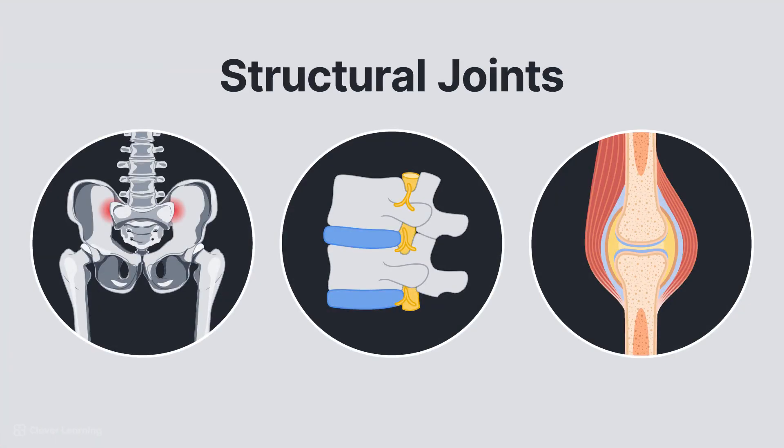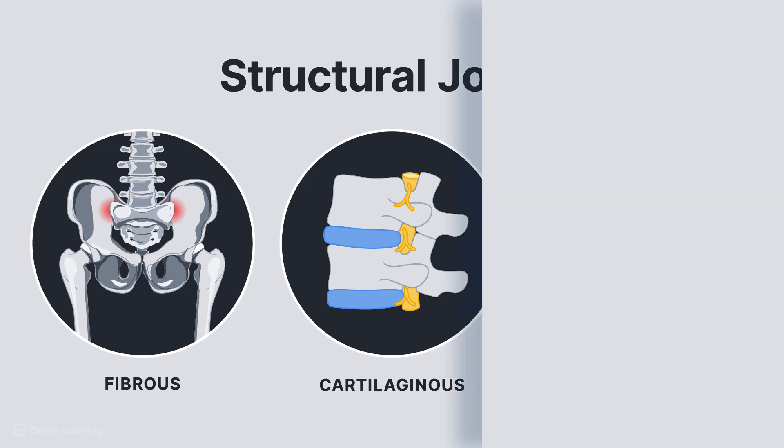Structural classification is based on the types of tissues that unite or bind articulating bones. Structurally, joints are classified into three distinct groups on the basis of their connective tissues: fibrous, cartilaginous, and synovial. Within these three broad categories are the 11 specific types of joints. Let's take a deeper look at each category.